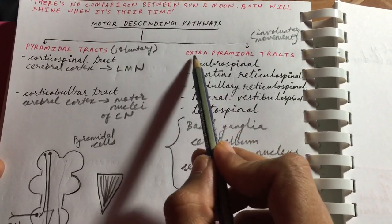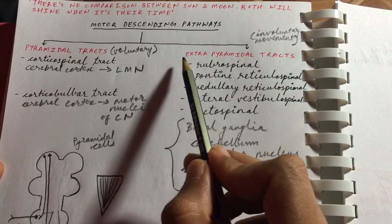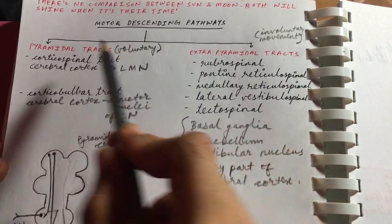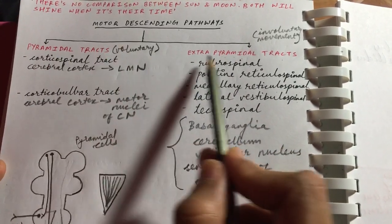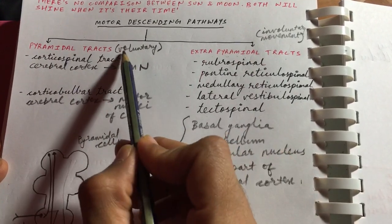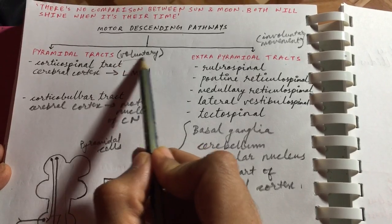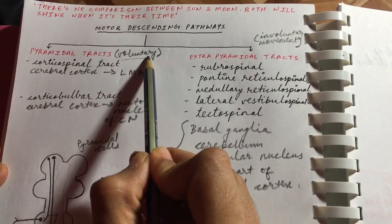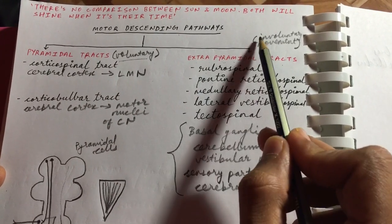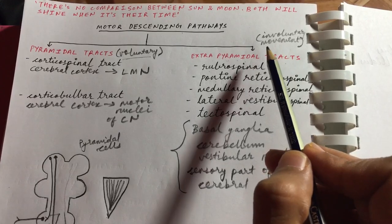Since these four components play a role in modulation and regulation of extra-pyramidal tracts, they are also considered part of the extra-pyramidal system. So the main difference between pyramidal tracts and extra-pyramidal tracts is their function: pyramidal tracts control voluntary movements, while extra-pyramidal tracts control involuntary movements.